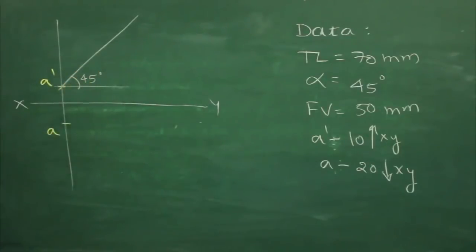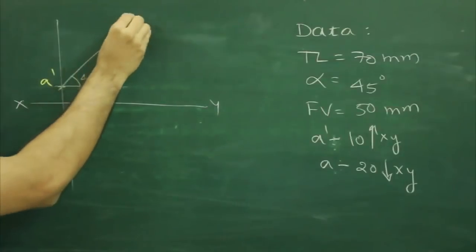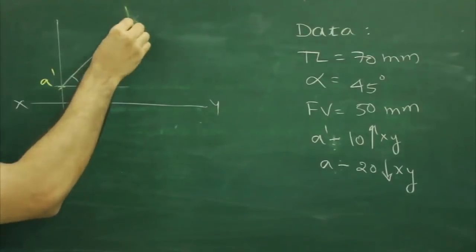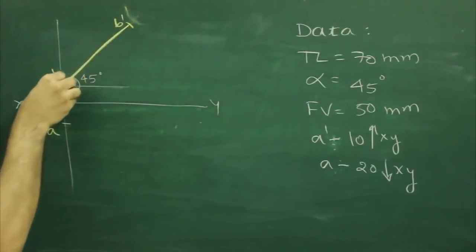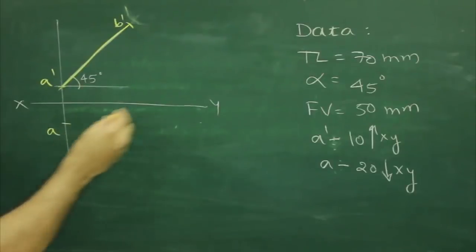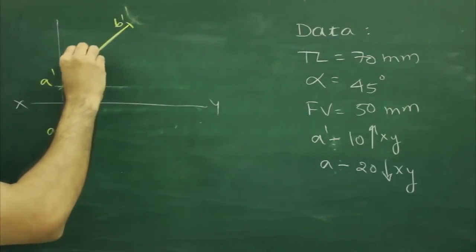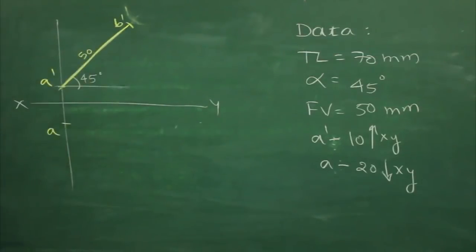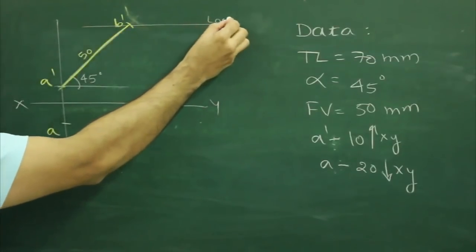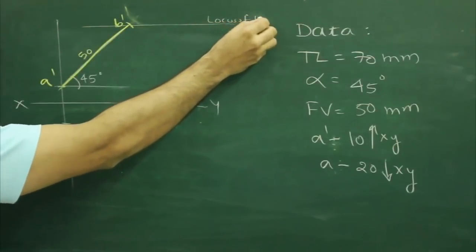Now this is alpha, so on this we can mark front view. So we will cut front view. How much is front view? 50. Then we can draw locus of B dash.